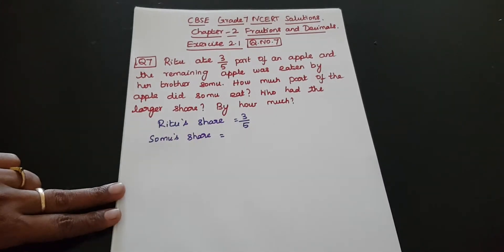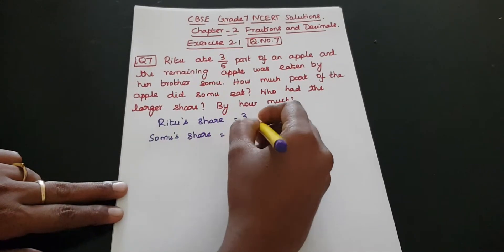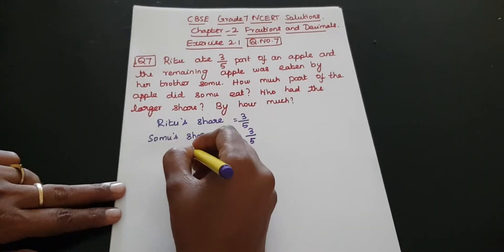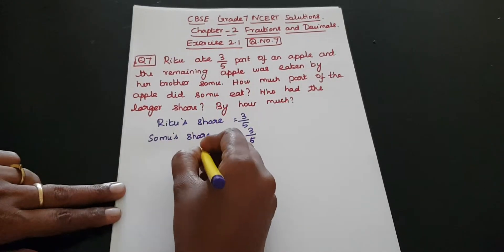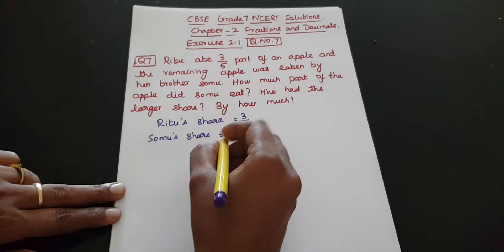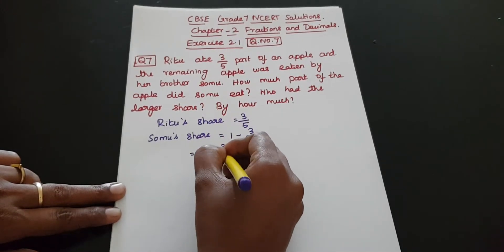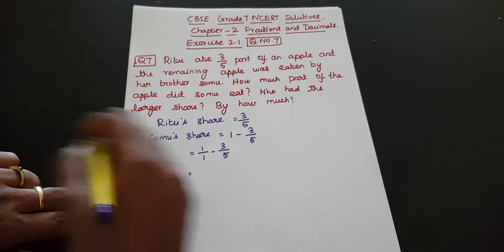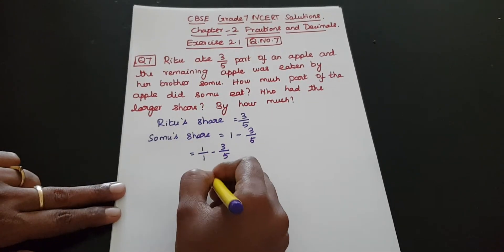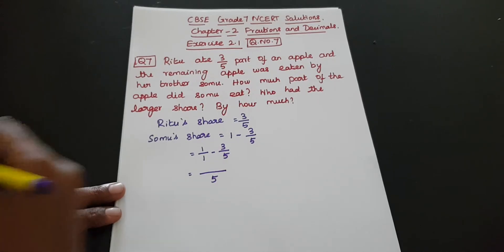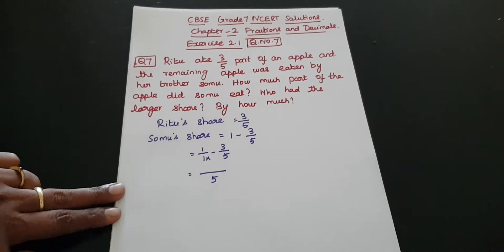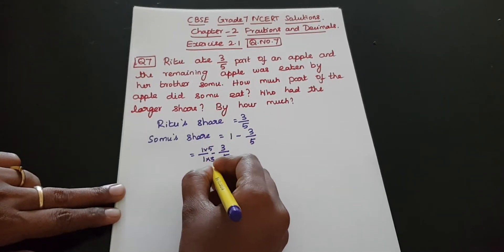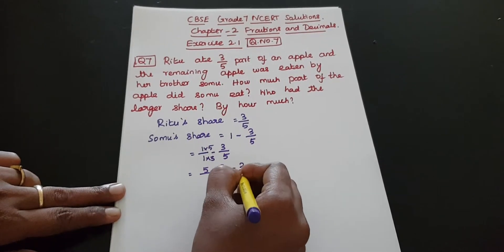One apple is going to be eaten. 3 by 5 is going to be separated. Remaining apple is going to be calculated. This is one whole number. We can write it as fraction 1 by 1 minus 3 by 5. Denominator is not the same, so we need to make it the same. LCM is 5. If we have denominator 5, we multiply by 5. So, 5 minus 3 is equal to 2 by 5.